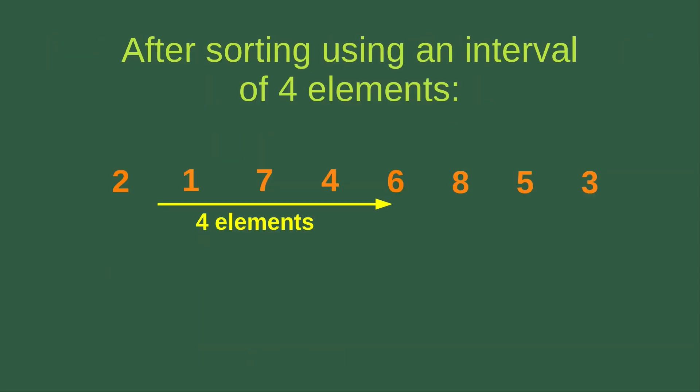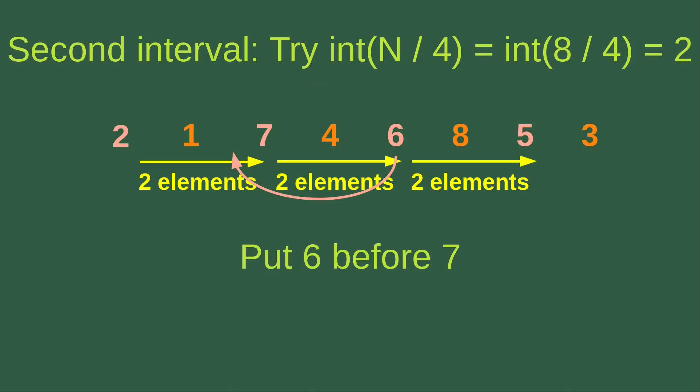After sorting using 4 elements as the interval size, we see that 2 and 6 are simply interchanged, and other elements remain unchanged. Now we try the second round of shell sort that uses n divided by 4 as the interval size. n equals 8, so 8 divided by 4 gives me 2. The integer part of 2 is simply equal to 2, so we sort elements that are 2 elements apart.